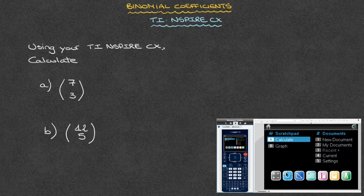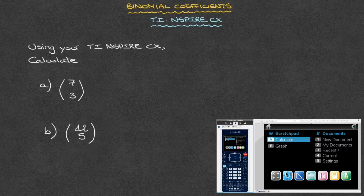First, we need to calculate the binomial coefficient 7 choose 3, and secondly, the coefficient 12 choose 5. So let's go ahead.